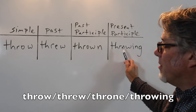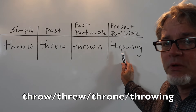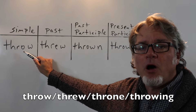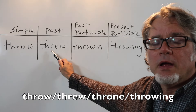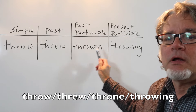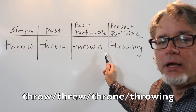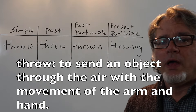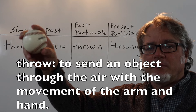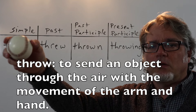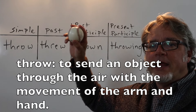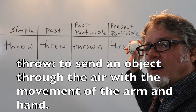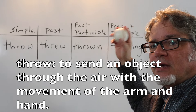The present participle is throwing. Throw, threw, thrown, throwing. Use throw when sending something like a ball or other object through the air with the movement of your arm and hand.